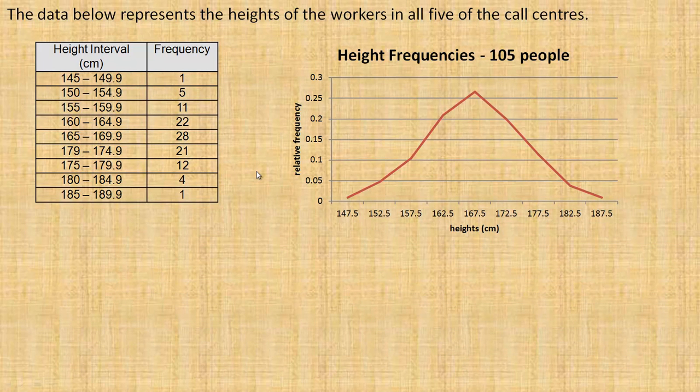Now if we take a look at this, this is a table and a graph for the heights of all the workers in all the call centers. So it's 105 people all together. And so here's the frequencies, and of course if I divide those by 105, I'll get the frequencies that I'm plotting here. I didn't bother to put them in the table.